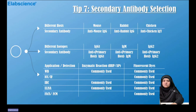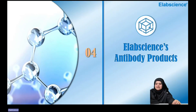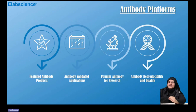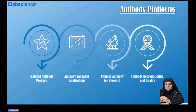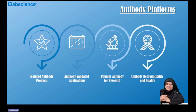Now let's move on to E-Lab Science antibody products. At E-Lab Science, we have four different platforms: featured antibody products — which include monoclonal antibody, polyclonal antibody, and secondary antibodies — and an antibody-validated platform providing antibodies validated by several methods such as ELISA, IHC, and IF. Some highly used antibodies in research are also available, and our antibodies have excellent quality and high reproducibility.